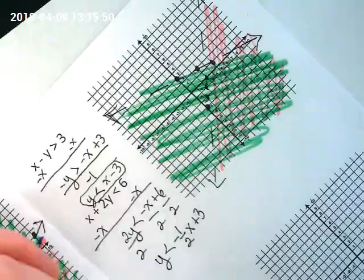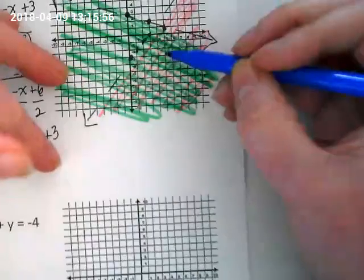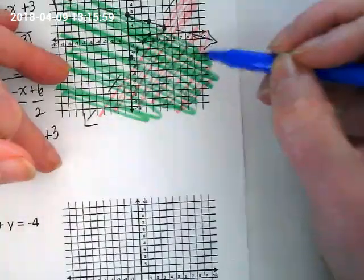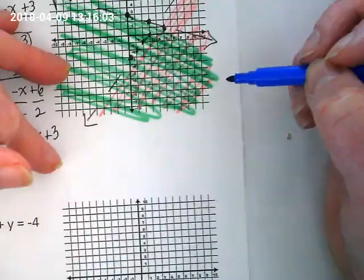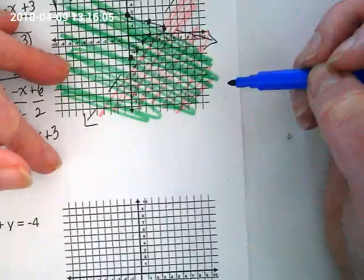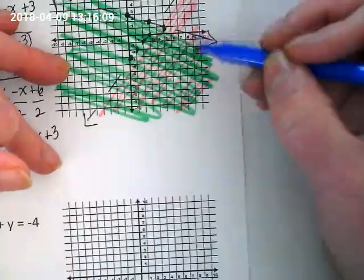Remember, our solutions are only going to be in the space that's double shaded. So any XY pair that's in this area is going to work. Can I pick a point on either one of these lines? No. Because they're not inclusive, right? The solid line means it can be there, but the dash line means it cannot.